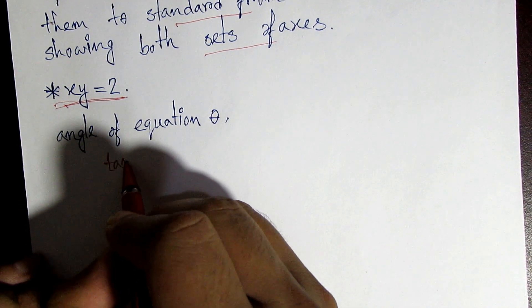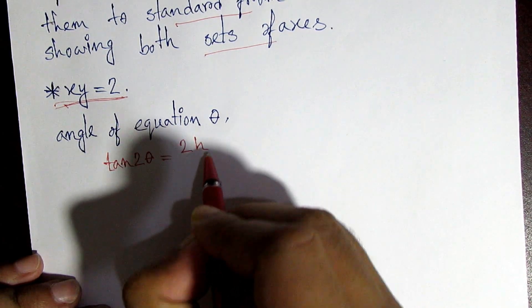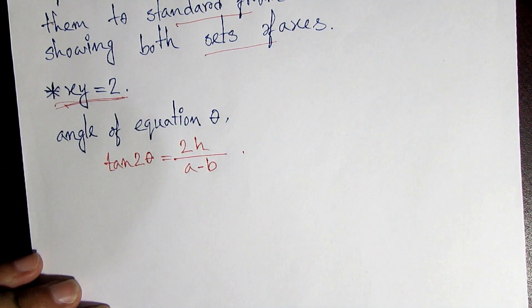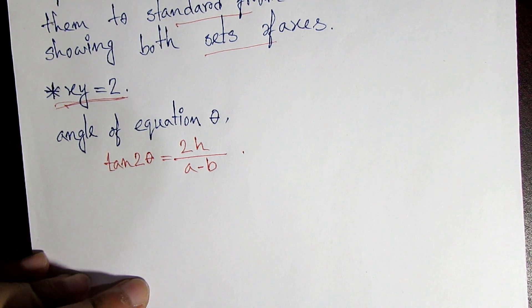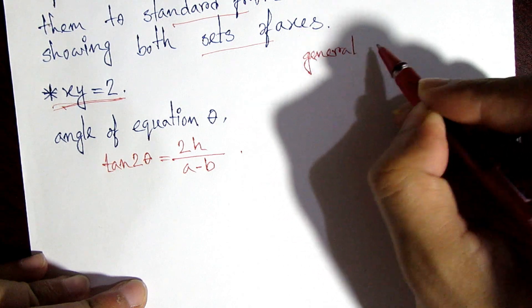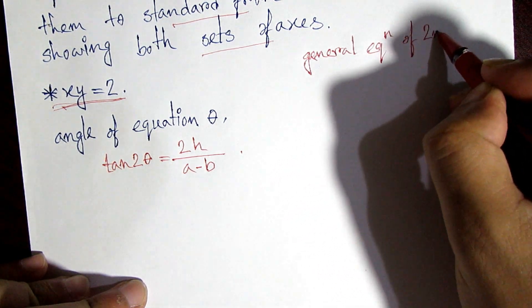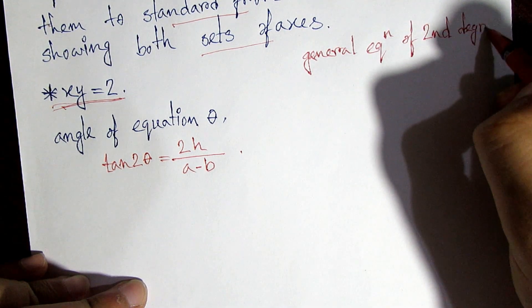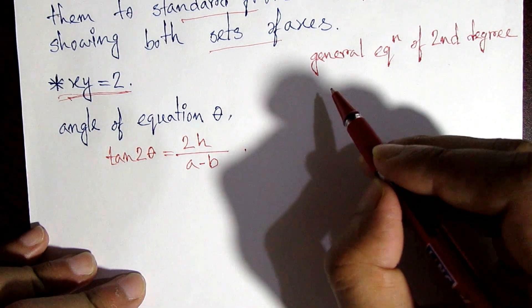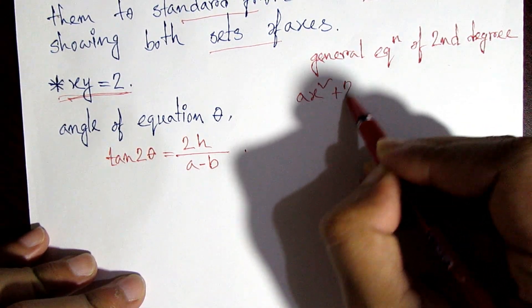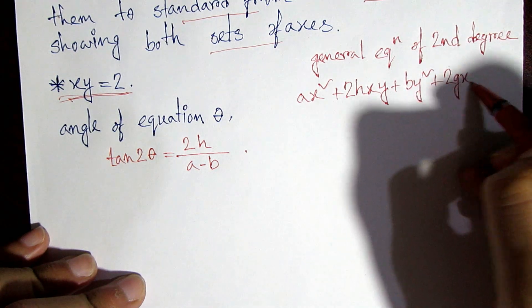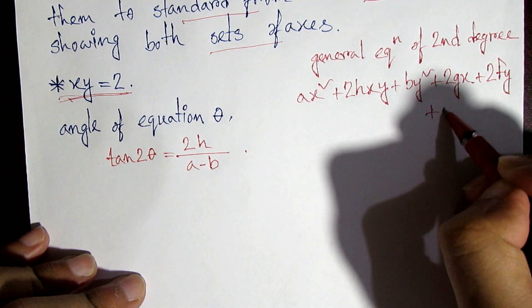This is theta in the square root. To remind us that we have a general equation of second degree: ax² + 2hxy + by² + 2gx + 2fy + c = 0.